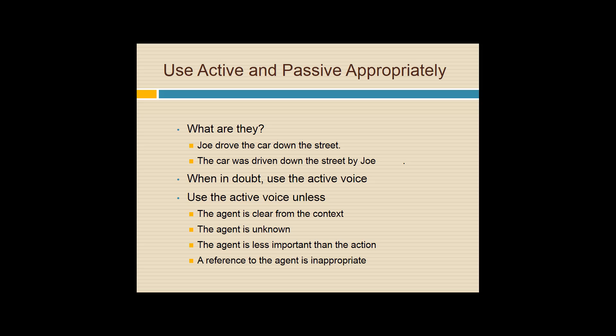'Joe drove the car down the street' — that's active voice: subject, verb, Joe did it, we know it. Passive voice: 'The car was driven down the street by Joe.' Even though the prepositional phrase 'by Joe' is there, it's still passive. That prepositional phrase will give this away. Use of the verb 'to be' — in this case 'was' — will give away use of the passive.